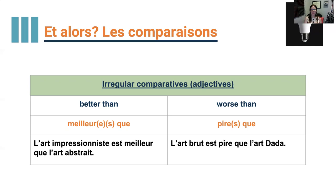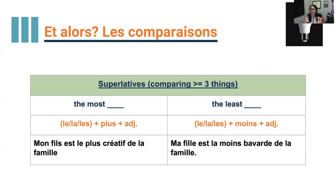You have to make agreement just like with adjectives — add an 'e' if feminine, 's' if plural, also for 'pire'. For the superlative — the most and the least: 'le/la/les plus + adjective'. Mon fils est le plus créatif de la famille — he is the most creative. Ma fille est la moins bavarde de la famille — she is the least talkative of the family. Use 'la' and feminine form because it's 'ma fille'. So for the most: le/la/les plus + adjective; for the least: le/la/les moins + adjective.